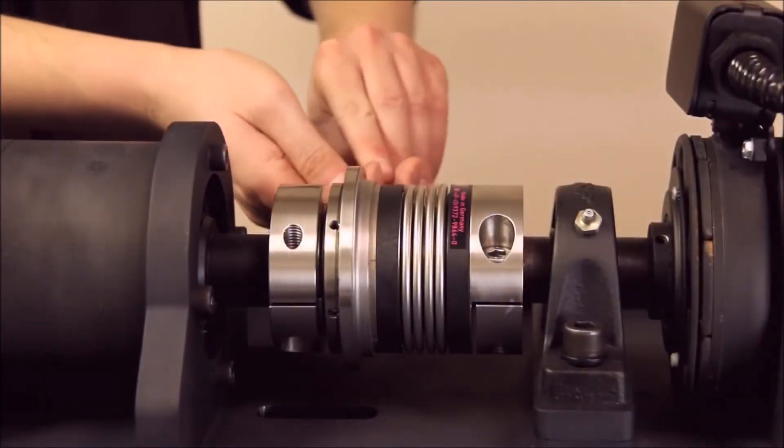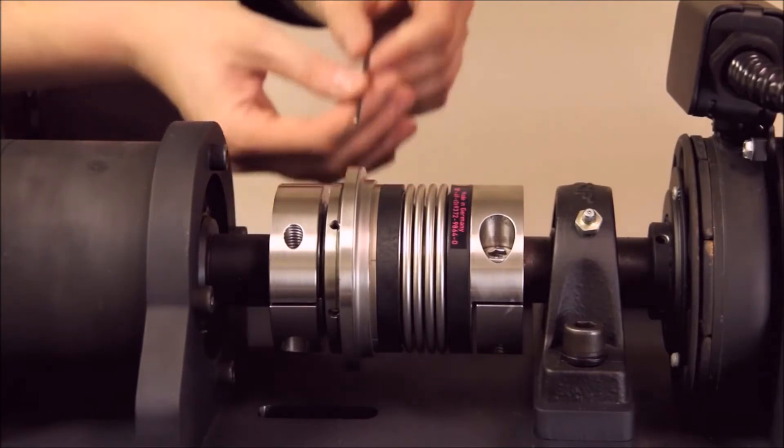To adjust the disengagement torque setting, first loosen the locking screws holding the torque adjustment nut in place.